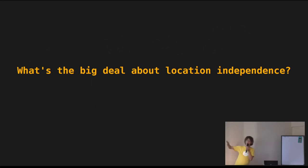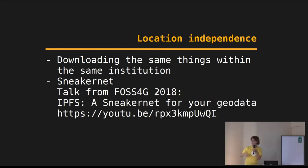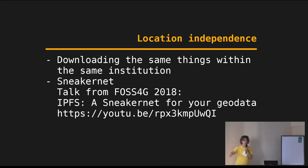Coming back to content addressing — it's location independent. What are the advantages? Let's say you work at some institution on the same research project and you download some satellite imagery — probably your colleague downloads the same data. You both get it from AWS and everything works. But how nice would it be that if your colleague has already downloaded it, you just get it directly from their computer instead of from the web? It would be way faster and pretty simple. This works if you address the data by content — you only care about which piece of data you want, not where you get it from.